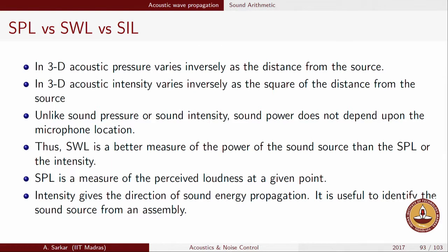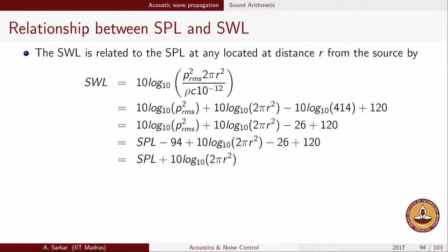Intensity mapping techniques are a time-tested means for noise source identification. All three quantities — SPL, SWL, and SIL — are useful in their own way. Sound power level also quantifies which component within an assembly is the principal noise troublemaker. It turns out that you can actually relate SPL and SWL. The SWL can be related to SPL at any desired location from the source, providing useful ways to convert between these scales.